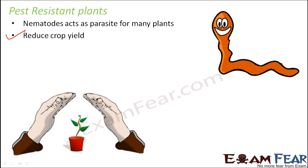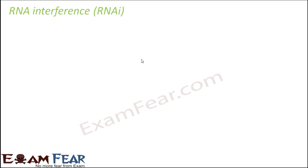To overcome this, we will talk about a new concept called RNAi, that is RNA interference. We are going to see how we achieve pest resistant plants using the concepts of genetic engineering through RNAi interference.